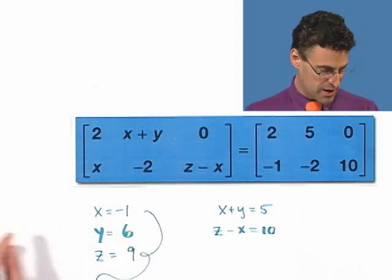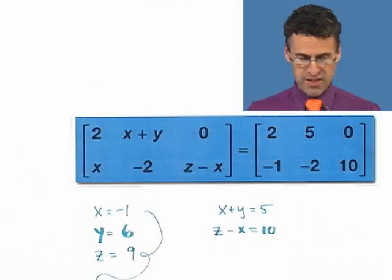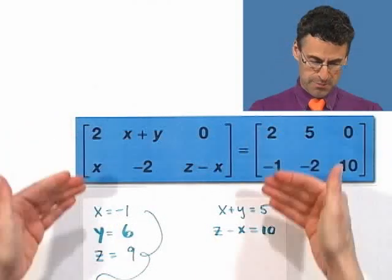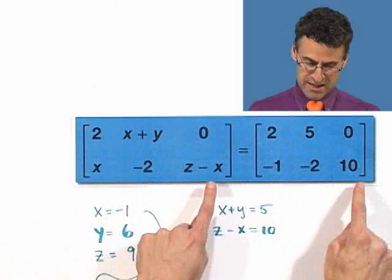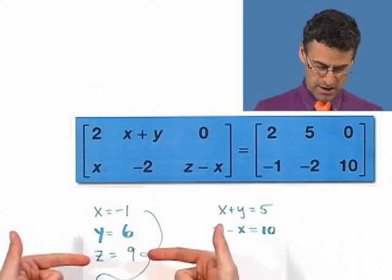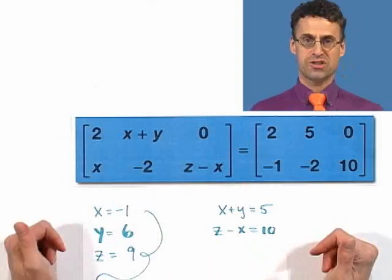Wow! I just solved for X, Y, and Z just knowing that these two matrices had to be the same matrix. They have the same number of rows, the same number of columns, and each corresponding entry has to be equal. With the choice of negative 1 for X, 6 for Y, and 9 for Z, that actually happens.